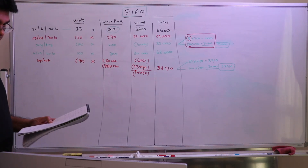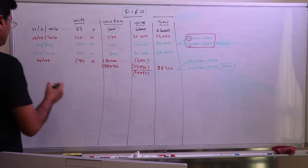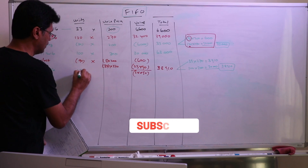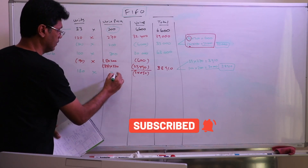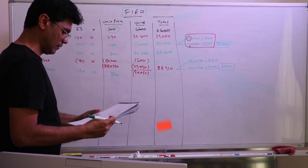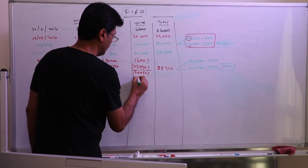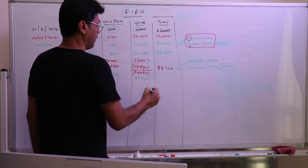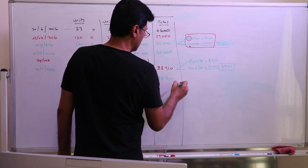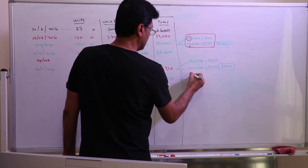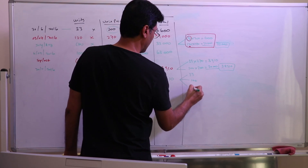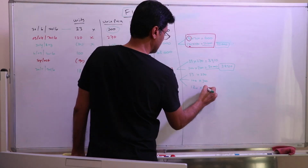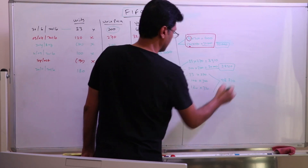Next purchase: November 2016 — 180 units at $330 each. That's 180 times $330 equals $59,400. Adding to the previous balance of $38,910 gives a total valuation of $98,310. The breakdown is now: 33 units at $270, 100 units at $300, and 180 units at $330.